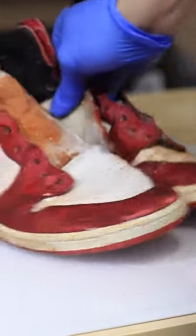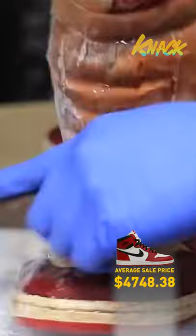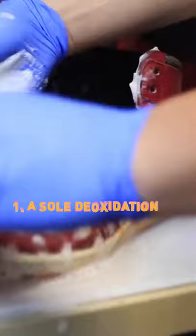Yo what is good guys, in this video we are going to be restoring a pair of 1985 Chicago Ones. These shoes are old enough to be my dad. These need a sole deoxidation, a repaint on upper leather, a whitening on the tongue, and a brand new swoosh.